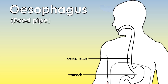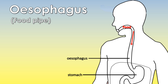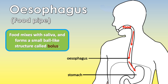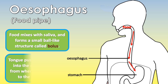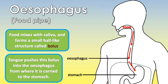The oesophagus, also known as the food pipe, is a tube-like structure that carries food from the mouth to the stomach. Inside the mouth, food mixes with saliva and forms a small ball-like structure called bolus. The tongue pushes this bolus into the oesophagus, from where it is carried to the stomach.